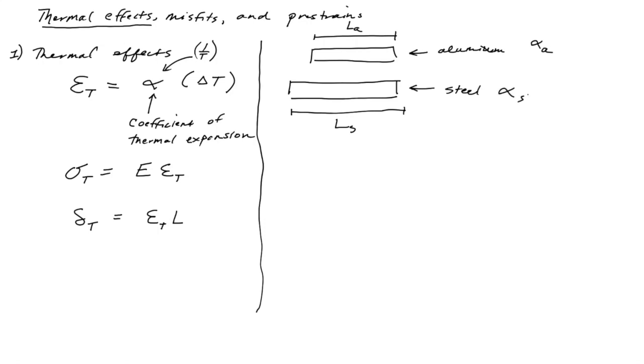It's going to have a coefficient of thermal expansion alpha S. The question we want to answer is, at what temperature T will the aluminum pipe be delta L longer than the steel pipe.